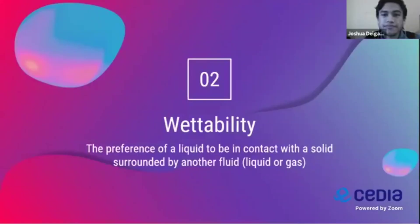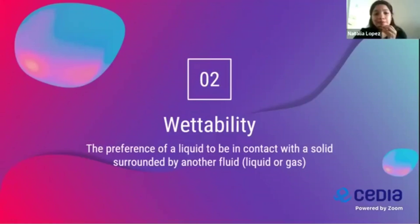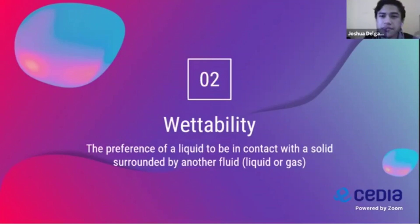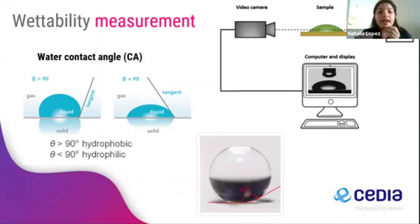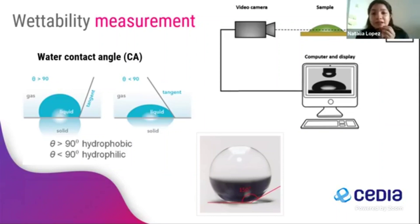Wettability is the preference of a liquid to be in contact with a solid surrounded by another fluid — liquid or gas. This is determined by the adhesive and cohesive forces between the solid and the fluid, which highly depend on the chemical composition of the contact surface. This property can be measured by contact angle.